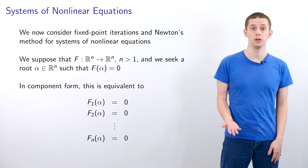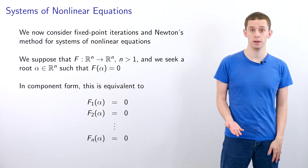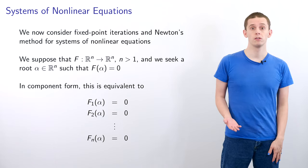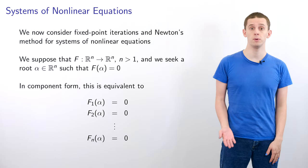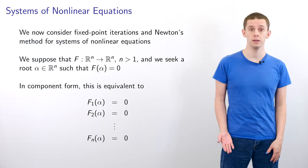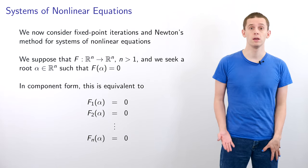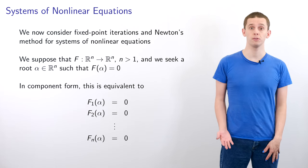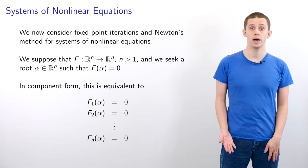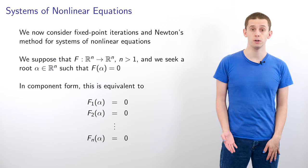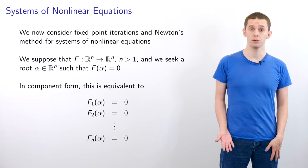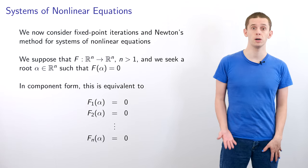Let's now look at fixed-point iterations and Newton's method for systems of nonlinear equations. We'll look at a function capital F from Rn to Rn, where n is greater than 1, and we'll seek a root alpha in Rn such that F of alpha is equal to 0. In component form, we can write this out as f1 of alpha equals 0, f2 of alpha equals 0, up to fn of alpha equals 0.